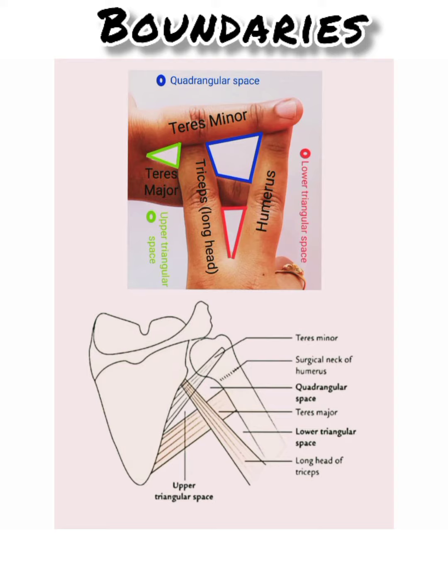Now coming to the upper triangular space. The superior border is formed by the teres minor, and the inferior border is formed by the teres major.